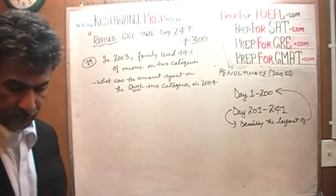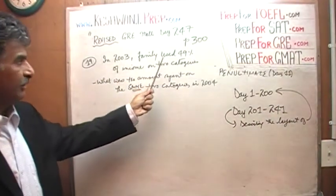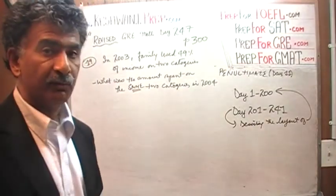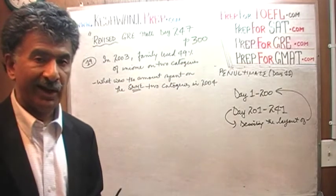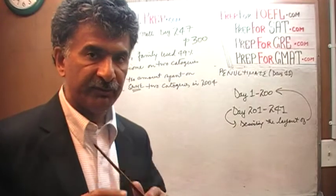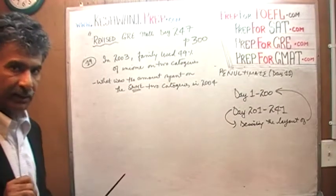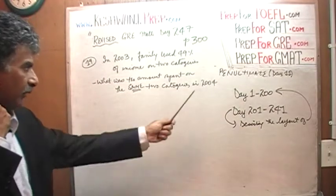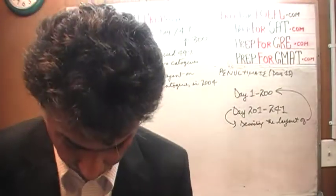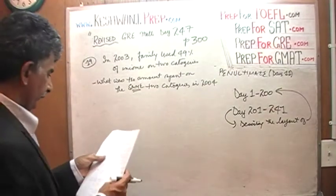It says, in 2003, family used 49% of their income on two categories. And they do not tell you which two categories they are. Of course, it is our job to figure out which two categories add up to 49%. They are telling us that there exist two categories where if you were to add up how much they spend their percentages, it comes out with 49%. The question is, what was the amount spent on the same two category the following year in 2004? So our first job is to figure out which two categories they are talking about. There are seven categories, let's list them all.